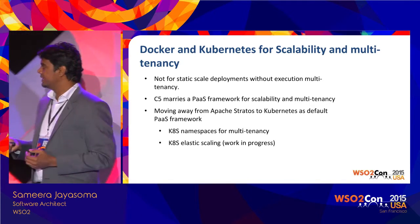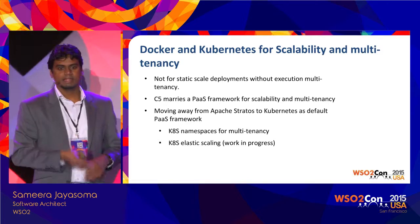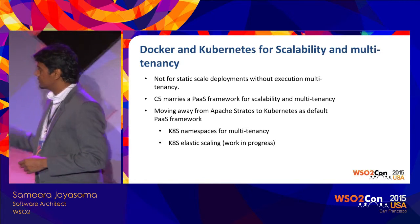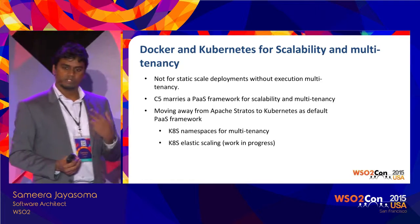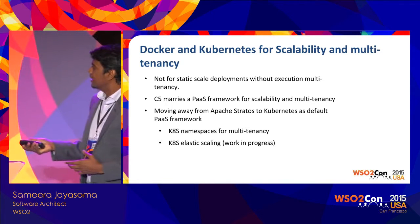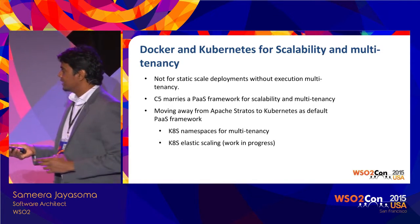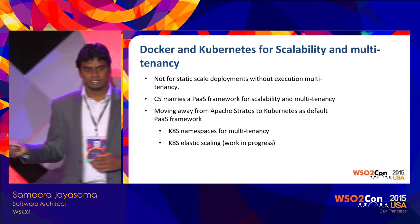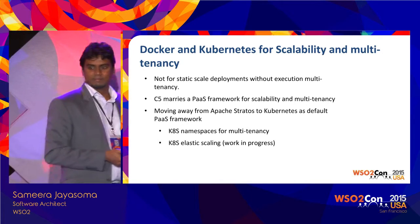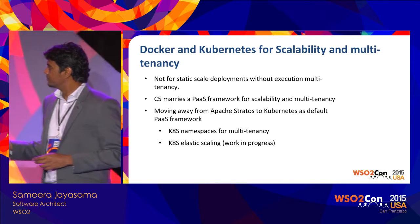If you require execution isolation especially in multi-tenancy, and also auto-scaling capabilities, then Carbon 5 requires a PaaS framework. We've been using Apache Stratos as the default PaaS framework in the existing Carbon platform, but now we are moving away from Apache Stratos and recommending Kubernetes as the default PaaS framework. With Kubernetes you can use namespaces to implement multi-tenancy, partition your Docker containers for full isolation, and leverage Kubernetes' elastic scaling features for auto-scaling.